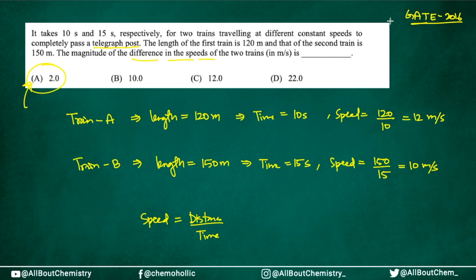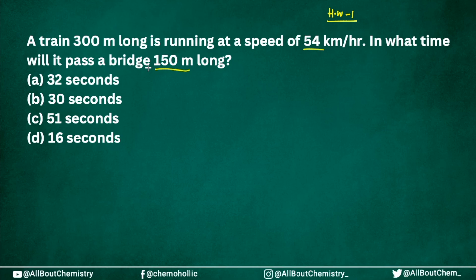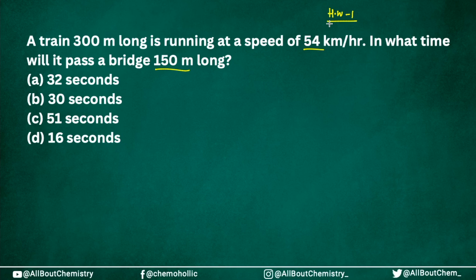Here is your first homework question: a train 300 meters long is running at a speed of 54 kilometers per hour. In what time will it pass a bridge which is 150 meters long? This is Condition 2 — the object has width. Total distance is 300 plus 150 equals 450 meters. First convert 54 km/h to meters per second by multiplying by 5/18, then use the formula to find the time.